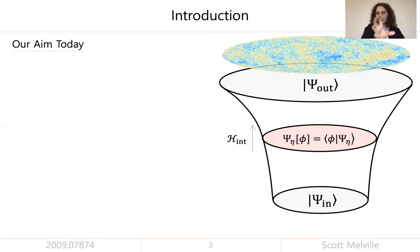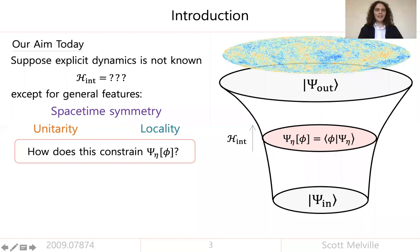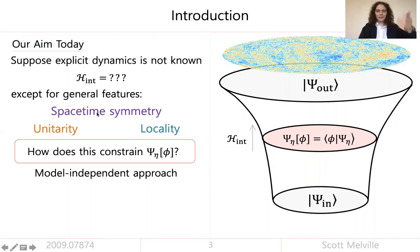What I want to achieve is to study this wave function, which describes the state of the universe at some conformal time eta during inflation. I'm going to suppose that the explicit Hamiltonian is not known, except for three very general features: spacetime symmetry, unitarity, and locality. The big question we want to answer is how does this constrain the wave function? The advantage of trying to do things this way is that it's a very model-independent approach — the kinds of constraints we derive ideally apply to any model of inflation, as long as it's symmetric, unitary, and local. These are very mild assumptions.